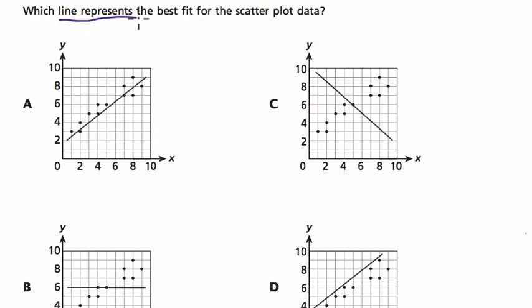A line of best fit does not need to cross all the points. In fact, it might not cross any points. What it needs to do is get as close to as many points as possible. So let's talk about why C can't be an answer.